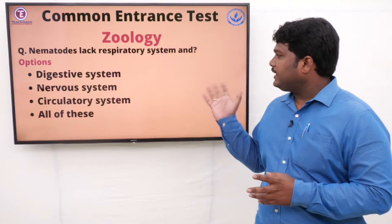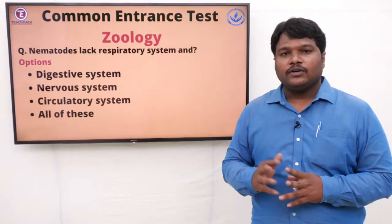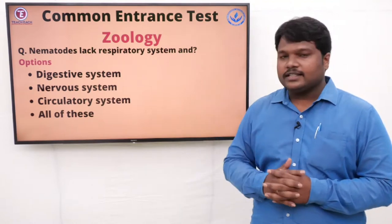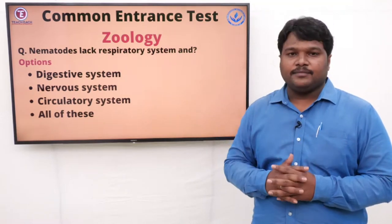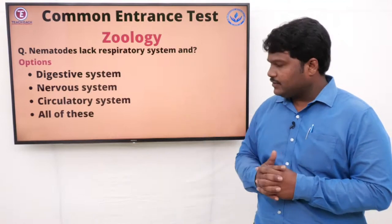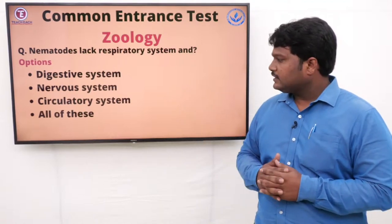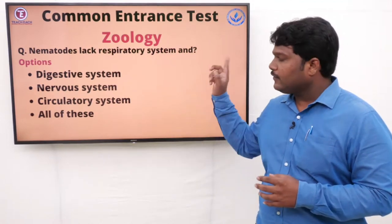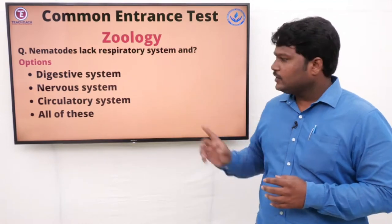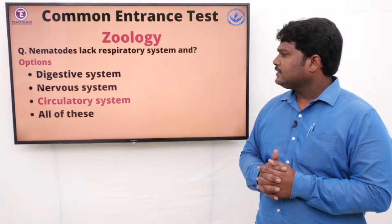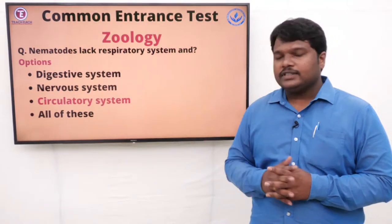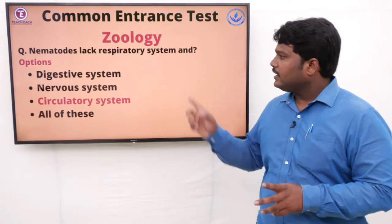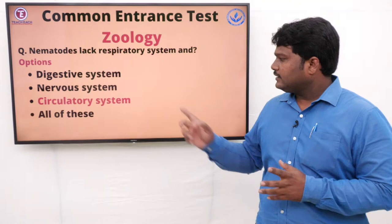Question 39: Nematodes lack respiratory system and. Nematodes will not have two systems — one is the respiratory system. The other system they are asking about. Options: A) Digestive system, B) Nervous system, C) Circulatory system, D) All of these. The right answer is circulatory system. Nematodes do not have a respiratory system and a circulatory system.